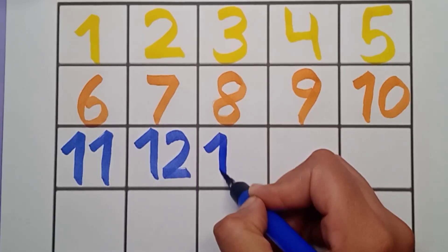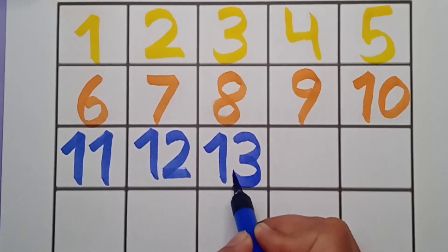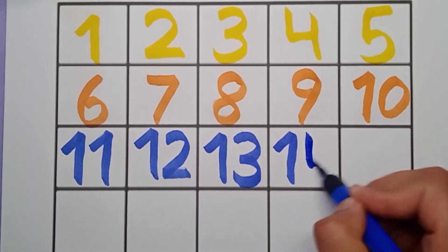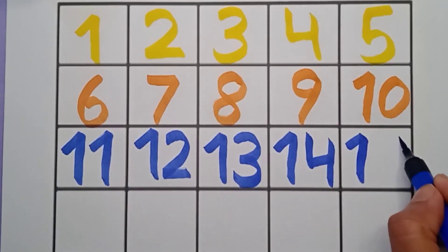It's blue color. Thirteen, thirteen, thirteen. Next number is fourteen, fourteen, fourteen. And what comes after fourteen? It's a fifteen, fifteen, fifteen, fifteen.